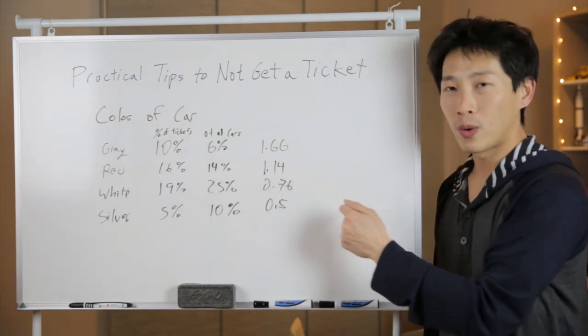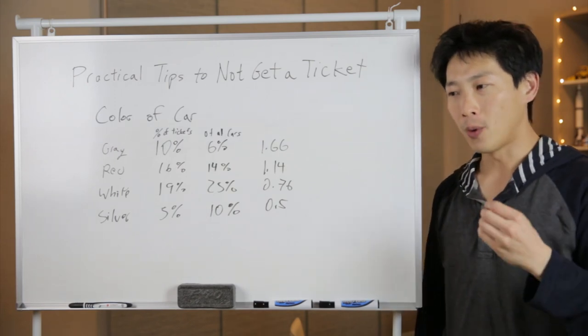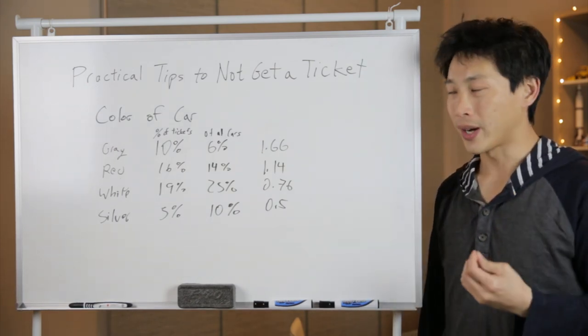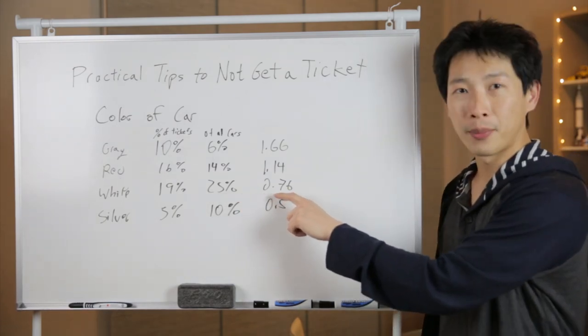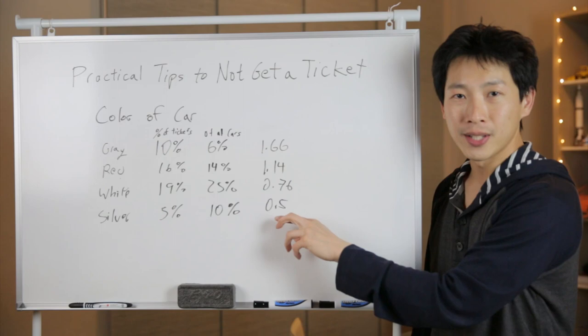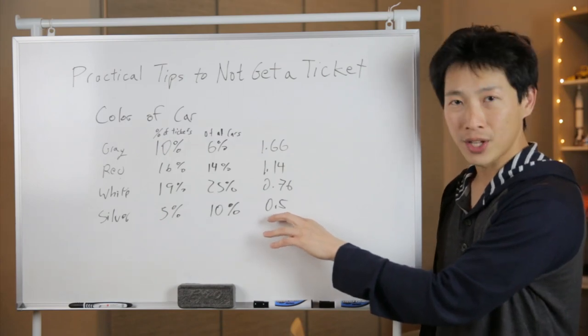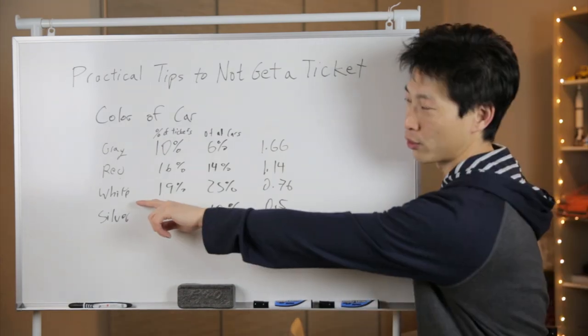That means if you just randomly drive a car with a certain color, if it's gray, you're going to get an elevated chance of getting ticketed. A red car comes in at 1.14, slightly more than a random chance of a red car. If you drive a white car, it's actually a little bit less at 0.76, and silver is a little bit lower at half the chance of the number of cars on the road.